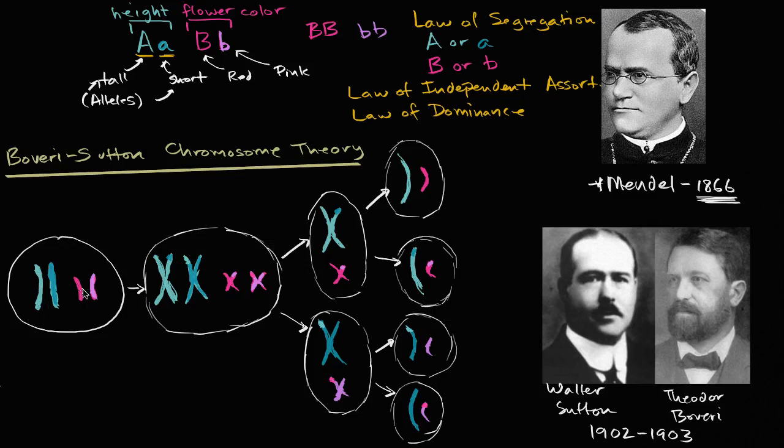And they looked at the reproduction and the fertilization during these processes. And they saw that the chromosomes seemed to do things that were very similar to these laws of segregation, laws of independent assortment, laws of dominance. And actually, the law of dominance we'll talk more about in future videos.